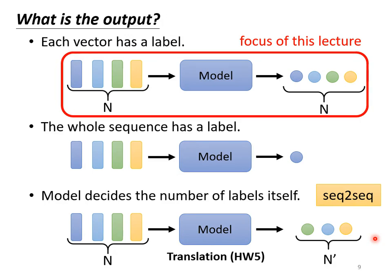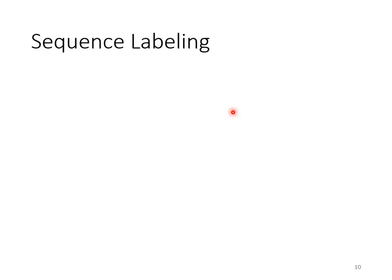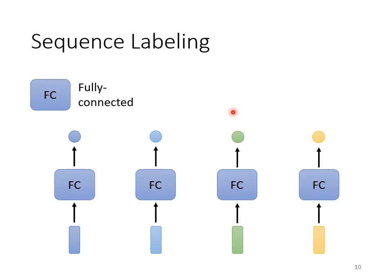We will discuss the third type in the future. Today we will only focus on the first type. You can take a look at homework 2's source code to see how we handle problems of the first type, since class time is limited. Therefore in this class, we will only talk about the first type today — that is, there is an equal number of inputs and outputs. The situation where there are as many inputs as outputs is called sequence labeling: you have to give each vector in the sequence a label.